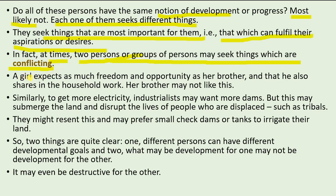For example, a girl expects as much freedom and opportunity as her brother, and that he also shares in the household work. Her brother may not like this — there may be conflict. This is the concept of conflicting developmental goals.